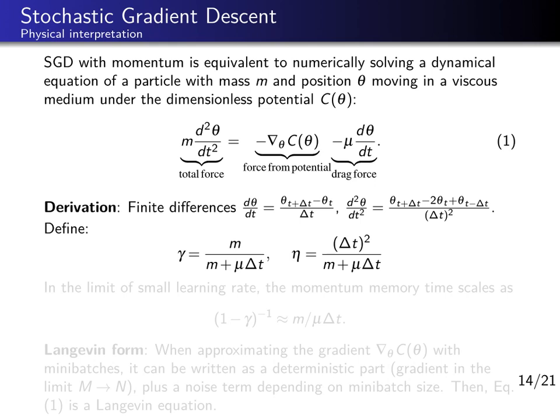We time-discretize this differential equation using finite differences for the first and second derivatives of the particle position theta. Defining gamma and eta in terms of the physics parameters mass m and friction constant mu, and inserting these into the equation of motion, the update equation for the particle position theta in every time step is identical to the stochastic gradient descent with momentum update. They are two sides of the same coin.